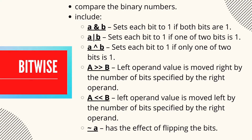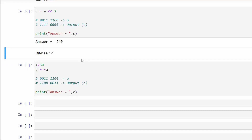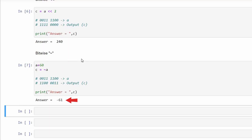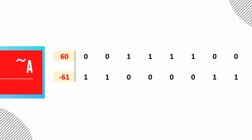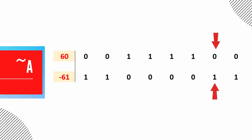Complement, also known as binary complement, acts as a NOT operator. It is unary and has the effect of flipping the bits. For example, negation of 60 is minus 61. The first digit from the right, originally 0, becomes 1 after negation; the second digit similarly becomes 1. The most significant digit is a signed digit — if it is 1, the number becomes negative.